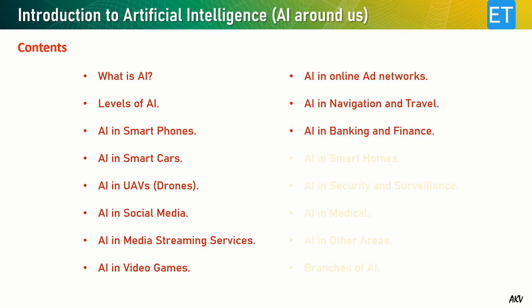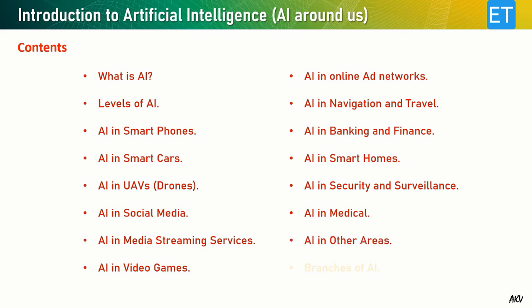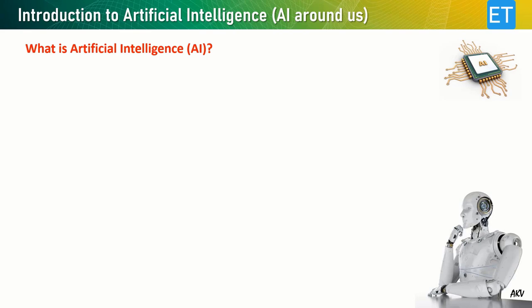We will also see how AI is impacting banking and finance, smart homes and smart appliances, security and surveillance, the medical area, and various other areas. Finally, I will explain the various branches of AI. So let's start this video and see what is artificial intelligence.